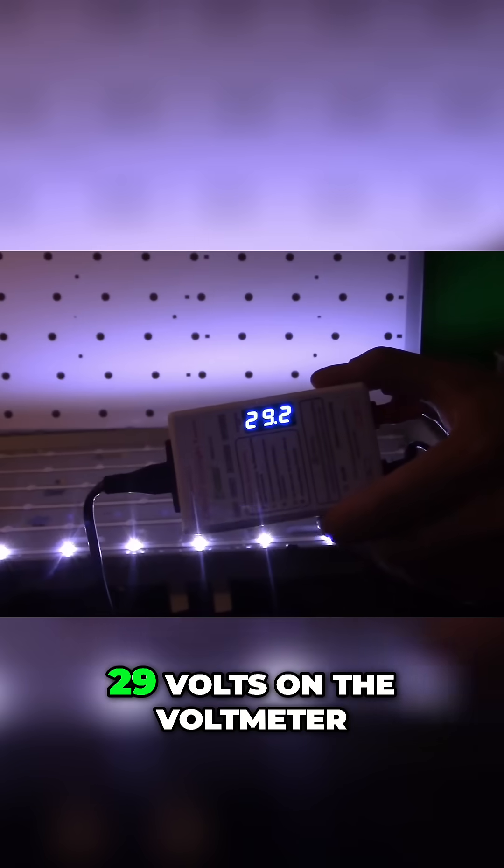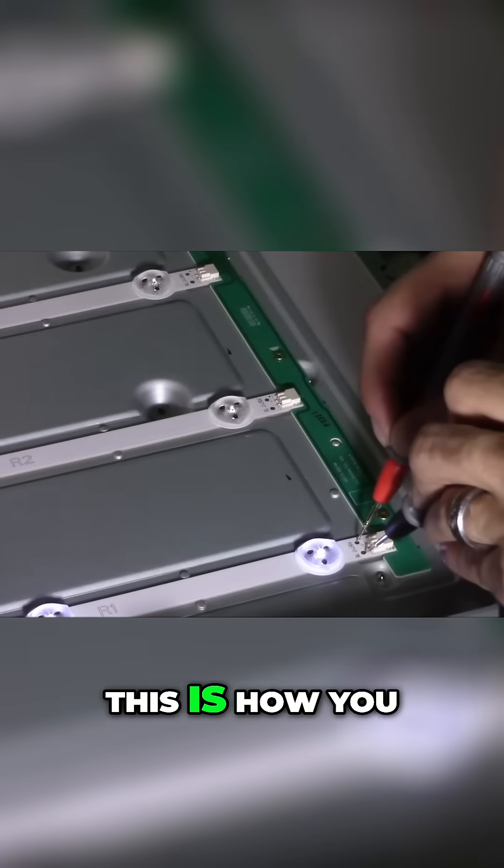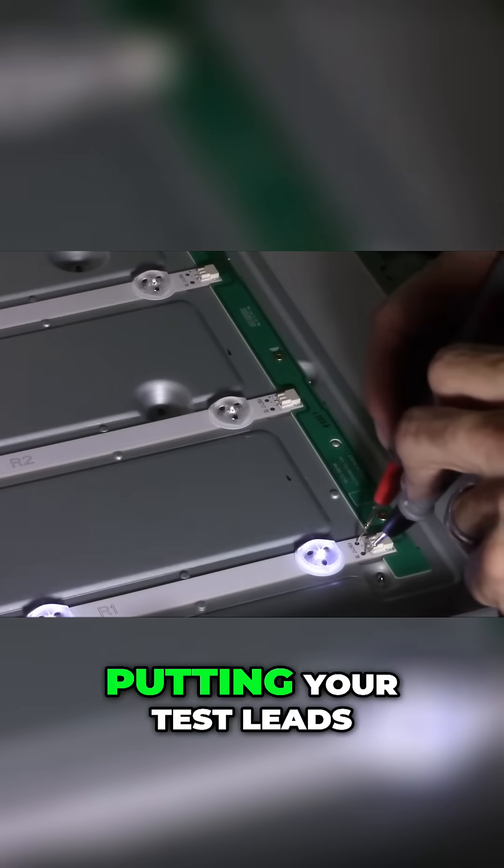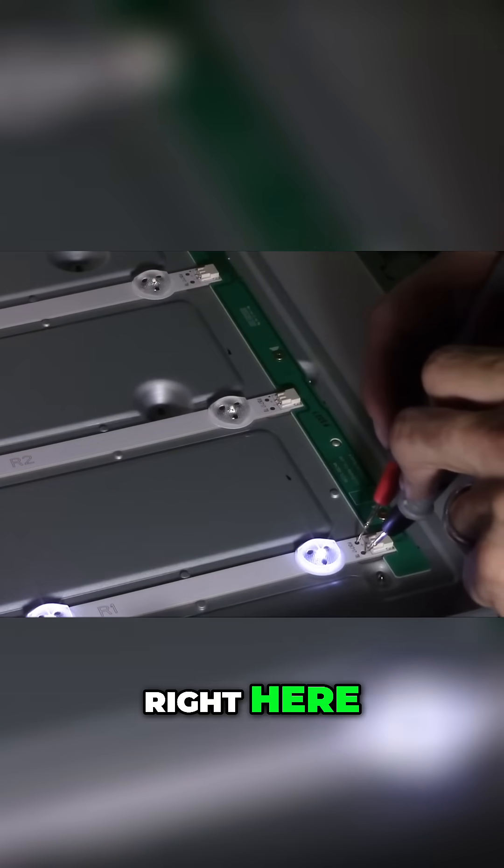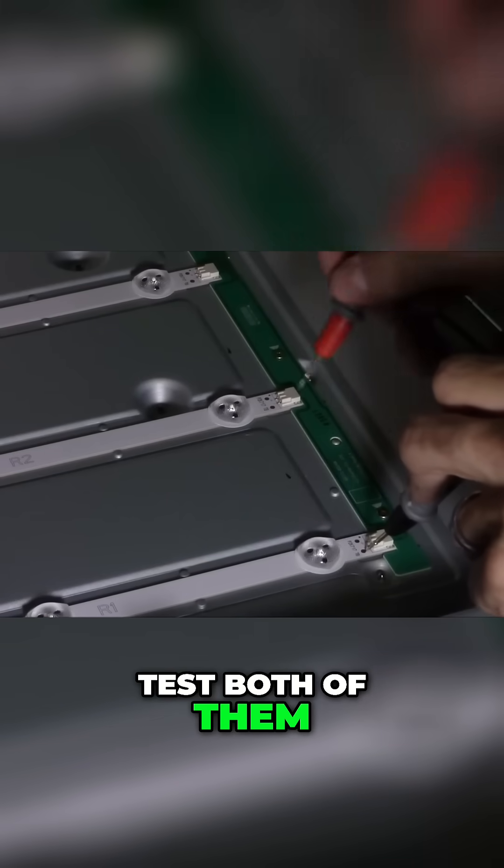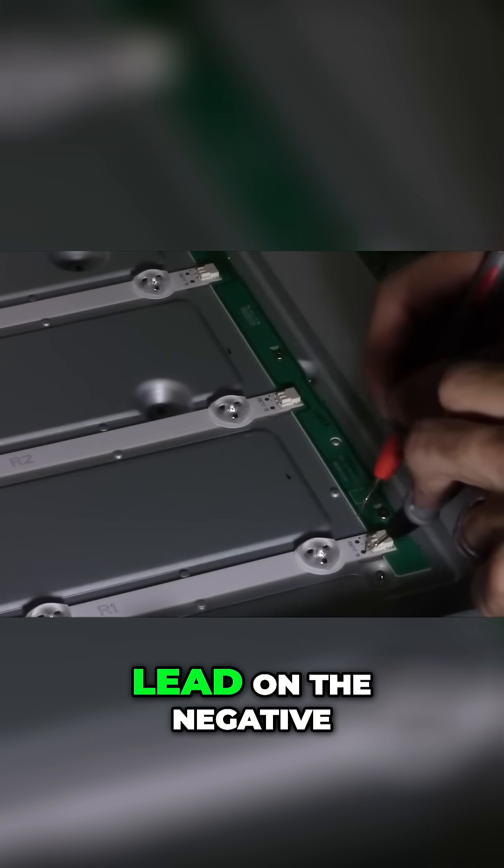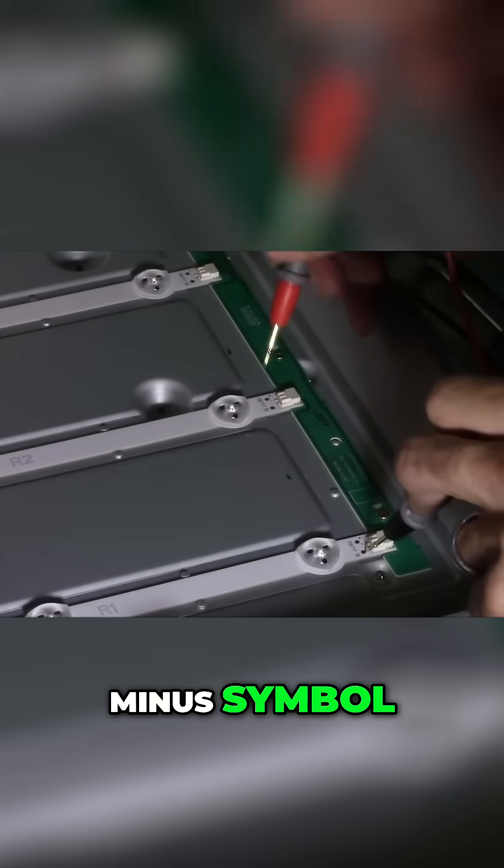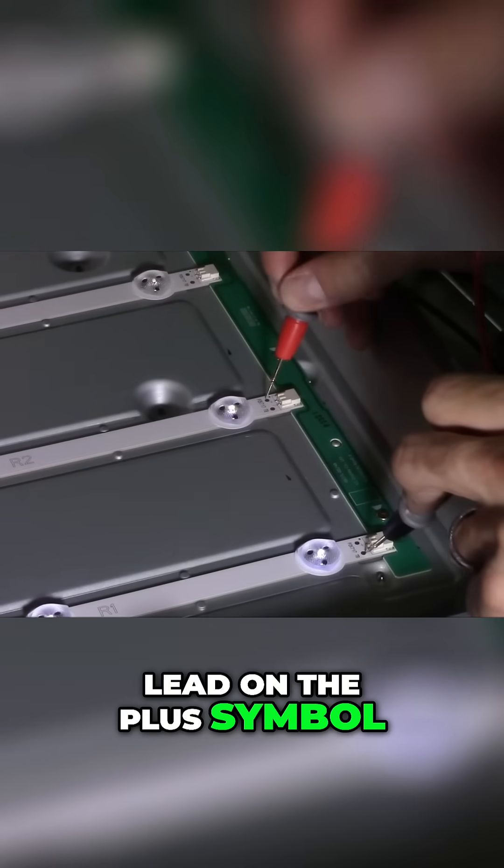And we're reading about 29 volts on the voltmeter. This is how you test one LED strip, putting your test leads right here. If you want to test both of them, you put your black lead on the negative, the striped side right here, minus symbol. And then your red lead on the plus symbol.